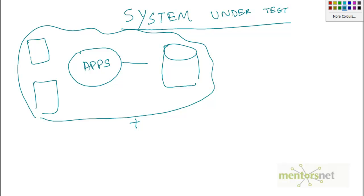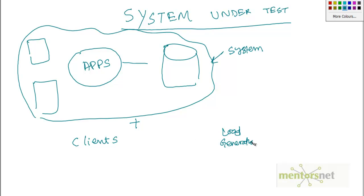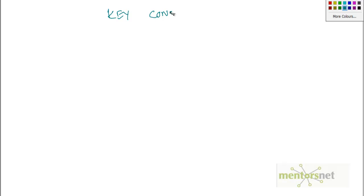We are going to simulate the load using load generators — those are called the clients. So this is your system, and this is your load generator, and all these things together constitute what is called the system under test. Now, what are the key considerations while looking after the system under test?